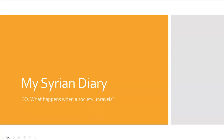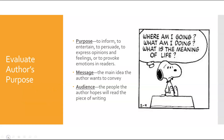Now we're going to start the second section of notes: 'My Syrian Diary.' The essential question with this text is again: what happens when a society unravels? For this text we're going to be looking at evaluating the author's purpose. Purpose is to inform, to entertain, to persuade, to express opinions and feelings, or to provoke emotions in readers. Normally a text does one, maybe two of these things, but mostly the main purpose is one of these.